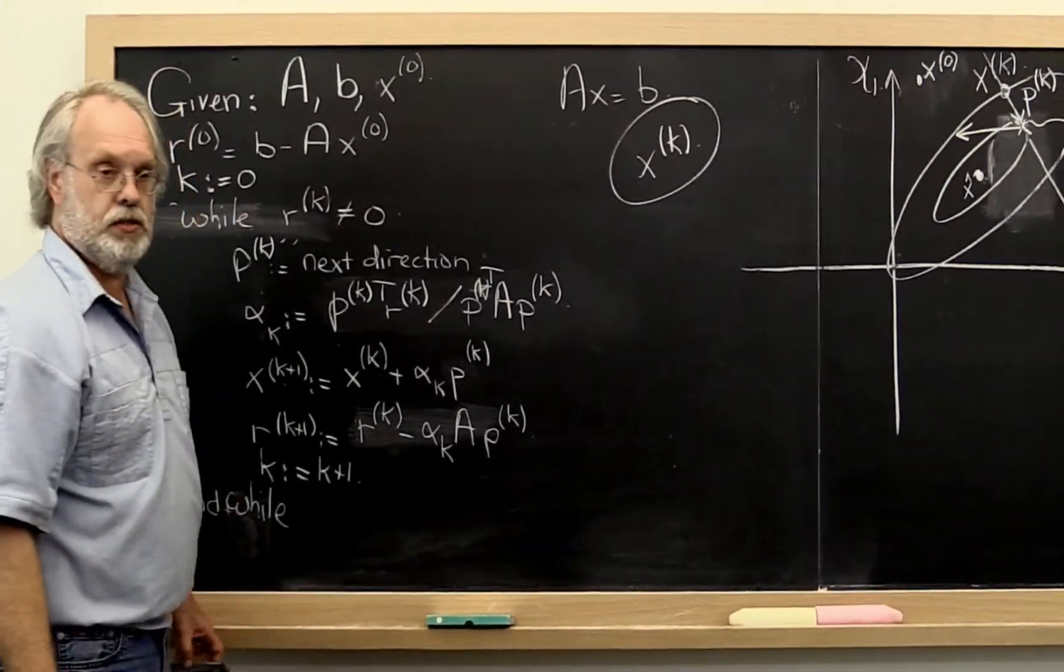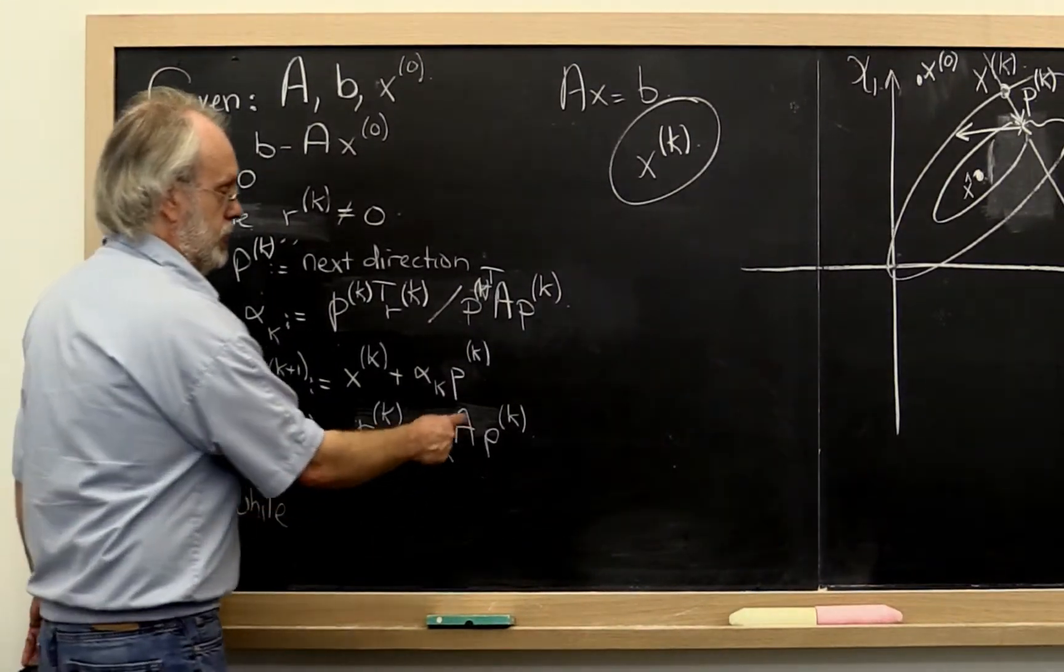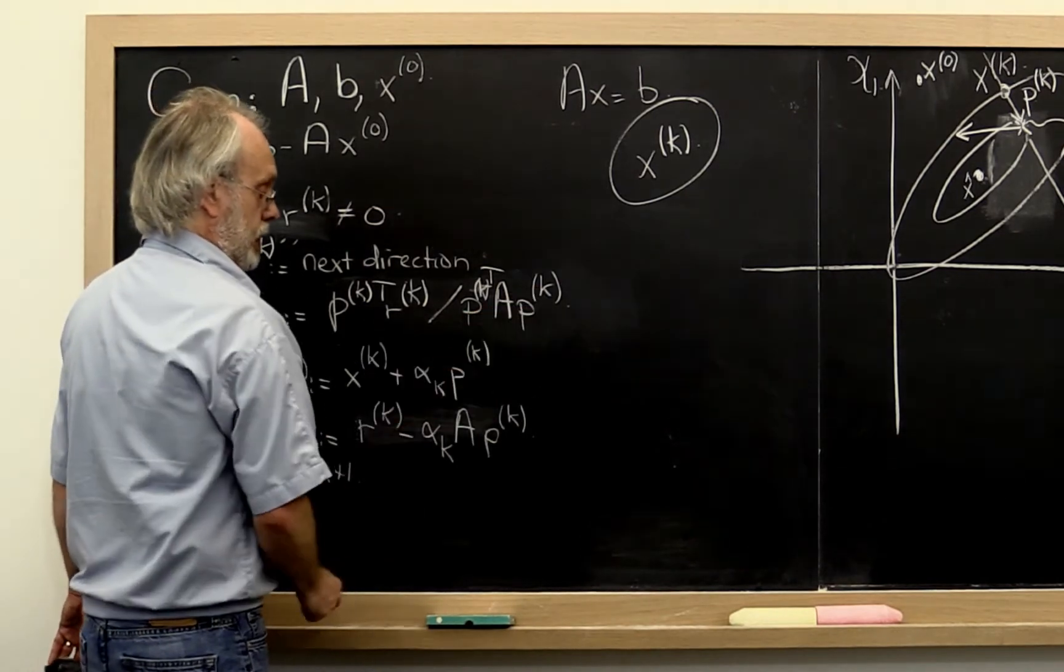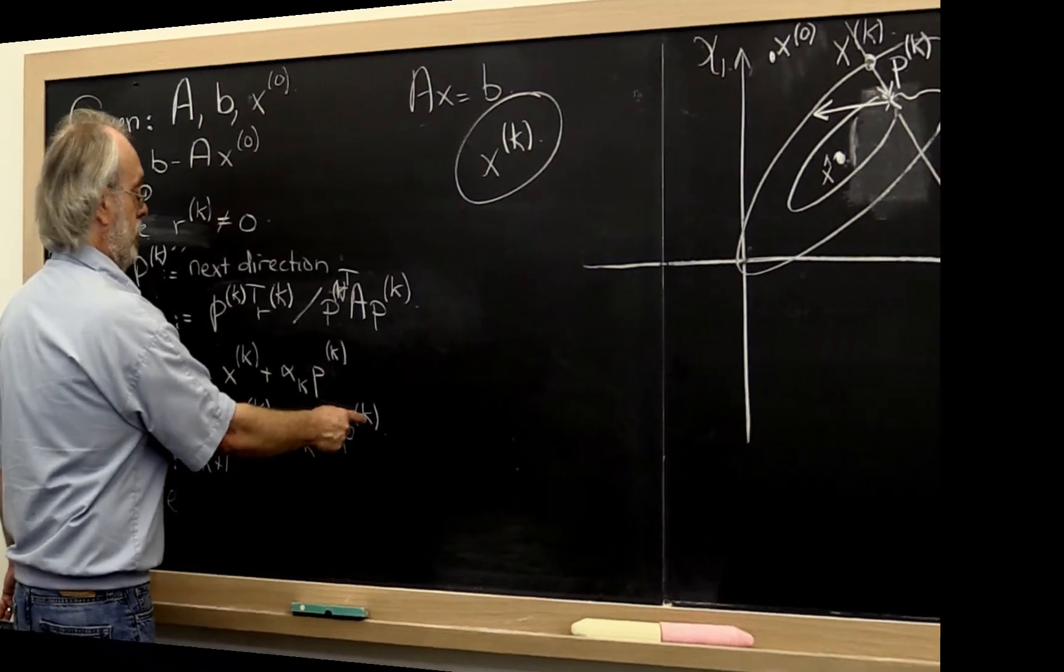And why is that important? Well, you notice that this requires you to compute A times pk, and this requires you to compute A times pk.